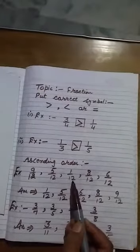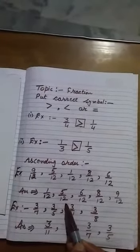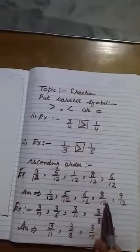Now compare these numbers. Smallest number is 1 upon 12, next 5 upon 12, next 6 upon 12, 8 upon 12, and 9 upon 12.